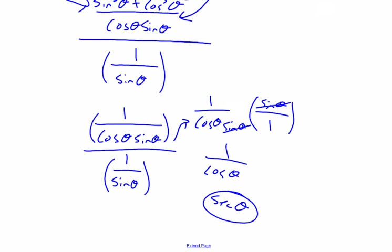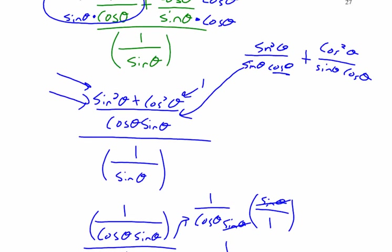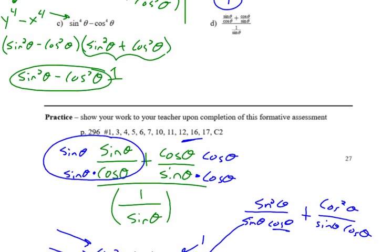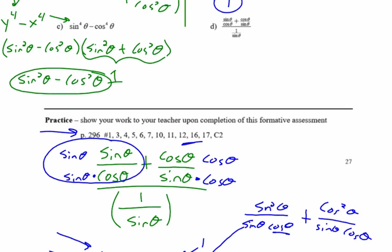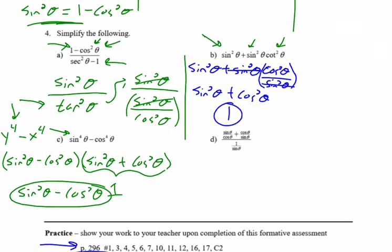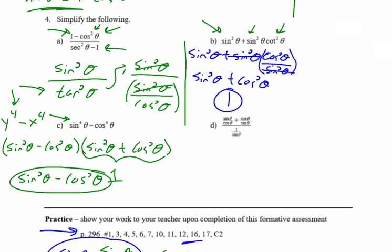Hopefully that made sense — I know there was a lot there. The big thing for this unit is going to be practicing. You need to be good at recognizing things like one minus cos²θ means sin²θ, or spotting a difference of squares, or knowing when to combine fractions over a common denominator. It's just recognizing identities when you see them.